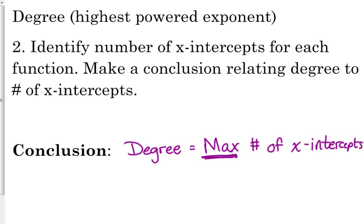Same thing with your quartic functions, 5 and 6. 6 has 4 x-intercepts. 5 only has 2. You can have any number from 0 all the way up to 4.